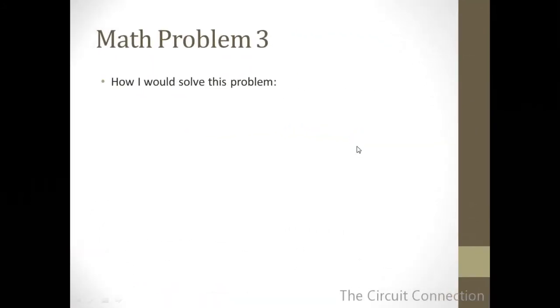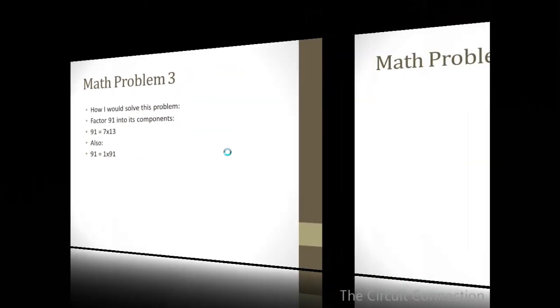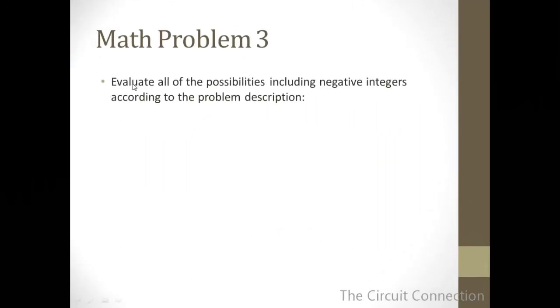The product of two distinct integers being 91. How would you approach this problem? The way I approached it was to factor 91 into its components. By factoring 91 into its components, you can see what you could actually multiply to make 91. That would be 7 and 13, which are prime numbers, so we don't have to even go any further. But also, take note of the fact that 91 is also equal to 1 × 91. So those are factors of 91 as well. We're going to evaluate all of the possibilities including negative integers according to the problem description, because the problem description didn't give any restrictions on whether numbers were only positive or only negative.